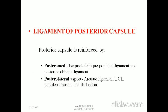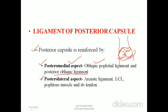The PCL's primary function is to restrain posterior displacement of the tibia; secondary function is to resist valgus and varus forces. The posterior capsule is reinforced on two sides: the posterior medial aspect has the oblique popliteal ligament and posterior oblique ligament; the posterior lateral aspect has the arcuate ligament, lateral collateral ligament, popliteus muscle and its tendons.